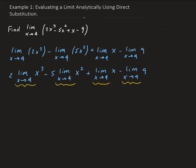We have 2 times, so the limit of x cubed as x approaches 4, this is just going to be 4 cubed. And then minus 5 times the limit of x squared as x approaches 4 is just 4 squared. And then we have the limit of x as x approaches 4, that is just going to give us 4.